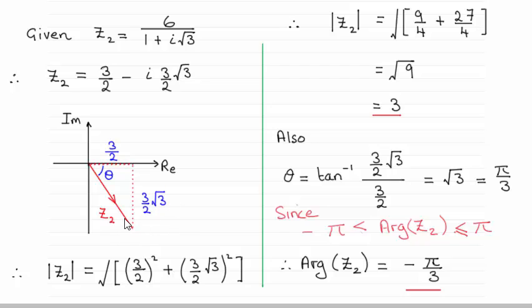where the real part is 3 upon 2, and the imaginary part is 3 upon 2 root 3. By using Pythagoras' theorem, this length here, the modulus of z2, is the root of this side squared plus this side squared. If you carry out that calculation, you end up with the square root of 9, which is 3.